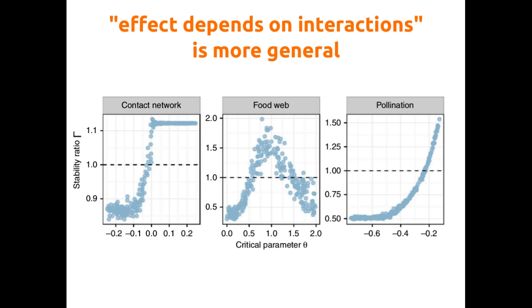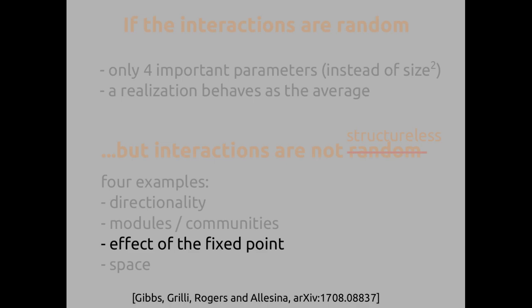On the y-axis is still the comparison with the random network, and you can see that sometimes the empirical network structure has a positive effect, while other times it has a negative effect compared to random networks. This concludes the part on modular structure.